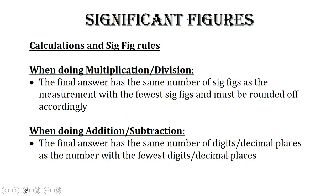Let's do some practice. But first, there are two additional rules. Whenever we take two measurements — say we're calculating the density of a material using mass and volume — the mass has three significant figures and the volume has two. The calculation cannot be more precise or more accurate than the measurements used to get it. So whenever you do multiplication and division, your final answer has the same number of significant figures as the measurement with the fewest sig figs that you began with.